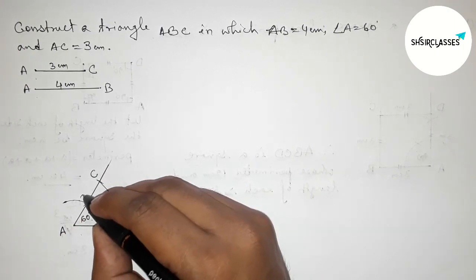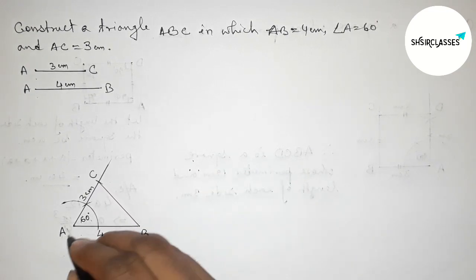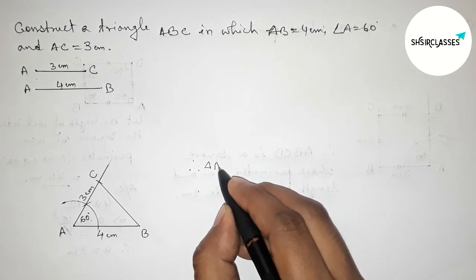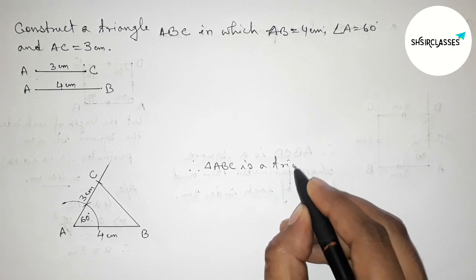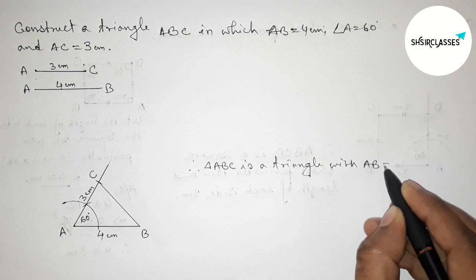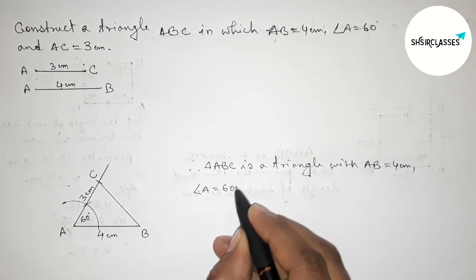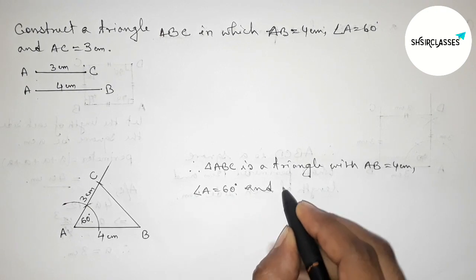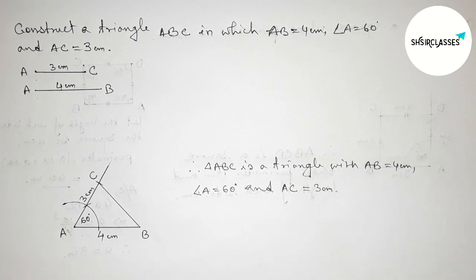Now taking point C and joining side BC to complete triangle ABC. So triangle ABC has side AB equals 4 centimeters, angle A equals 60 degrees, and AC equals 3 centimeters. That's all. Thanks for watching — if this video is helpful, please share it with your friends.